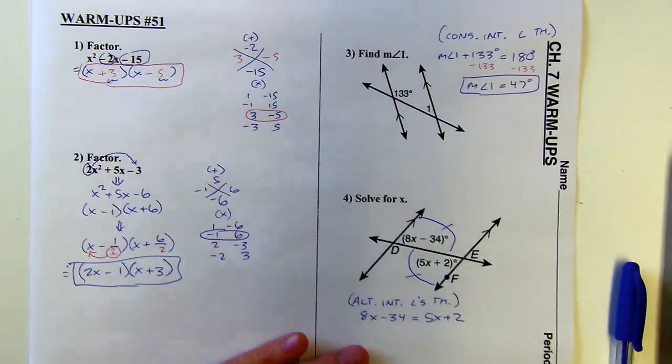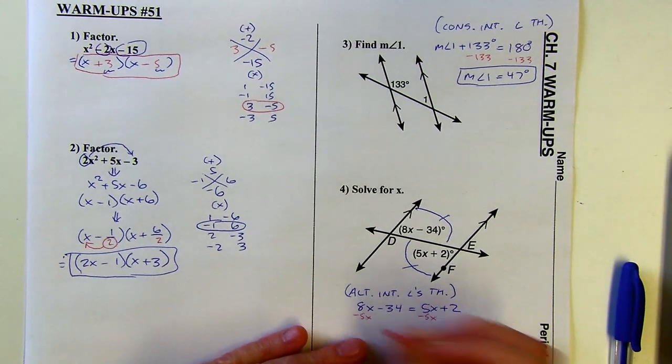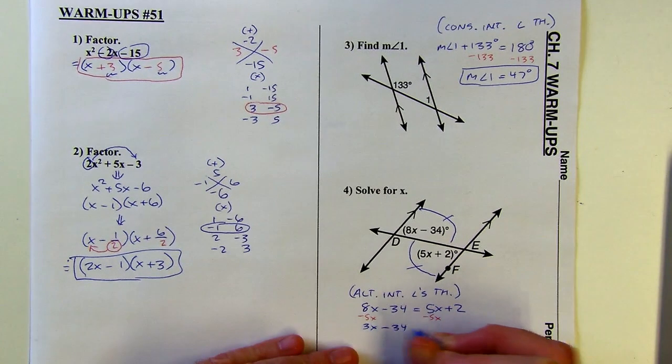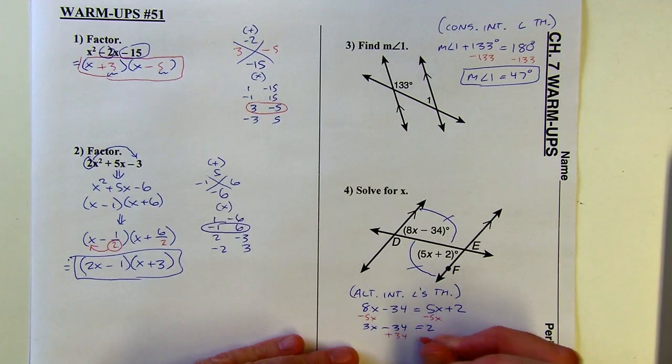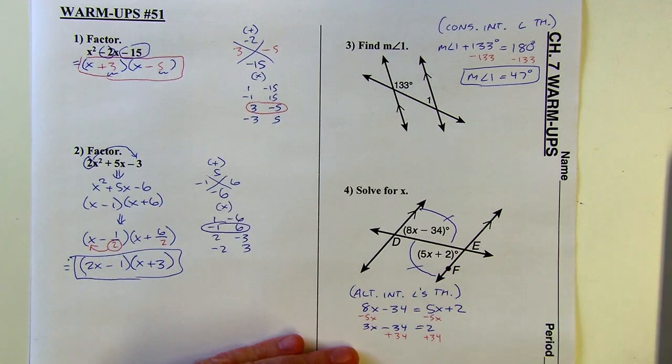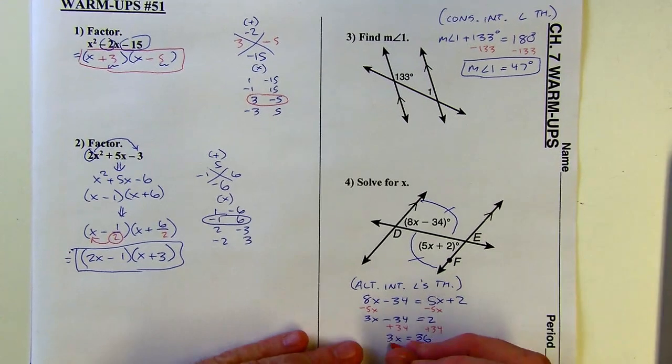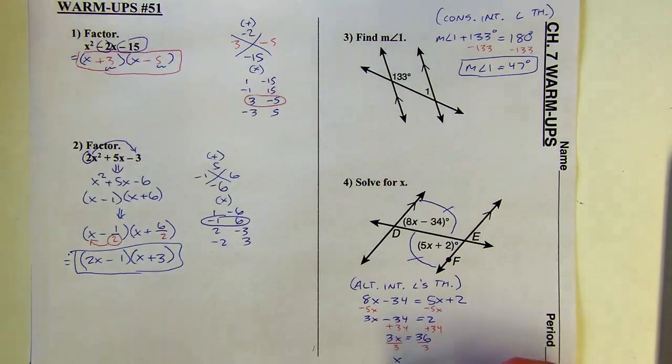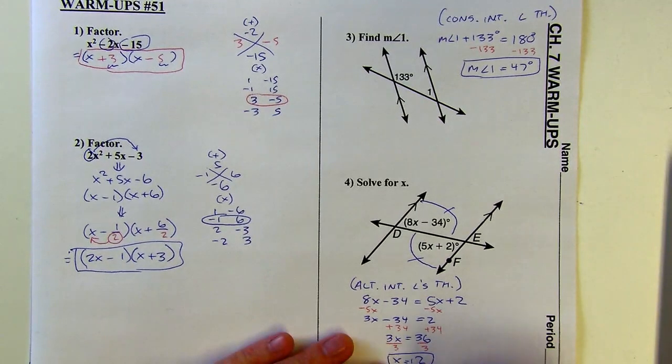And then I'll start solving for X. Subtracting 5X from both sides. Combine my X terms. And I'm going to add 34. And divide by 3. And X is going to equal 12. Let's see if I'm still on screen here. Just barely on screen. X equals 12. There we go.